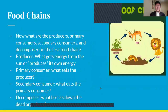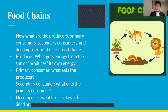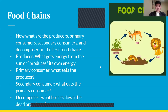Now, what are the producers, primary consumers, secondary consumers, and decomposers in this food chain? Remember: the producer produces its own energy, so which organism gets its energy from the sun? What's the primary consumer — what eats the producer? What's the secondary consumer — what eats the primary consumer? And what's the decomposer — what breaks down the dead organisms? Pause the video to think through these answers yourself.